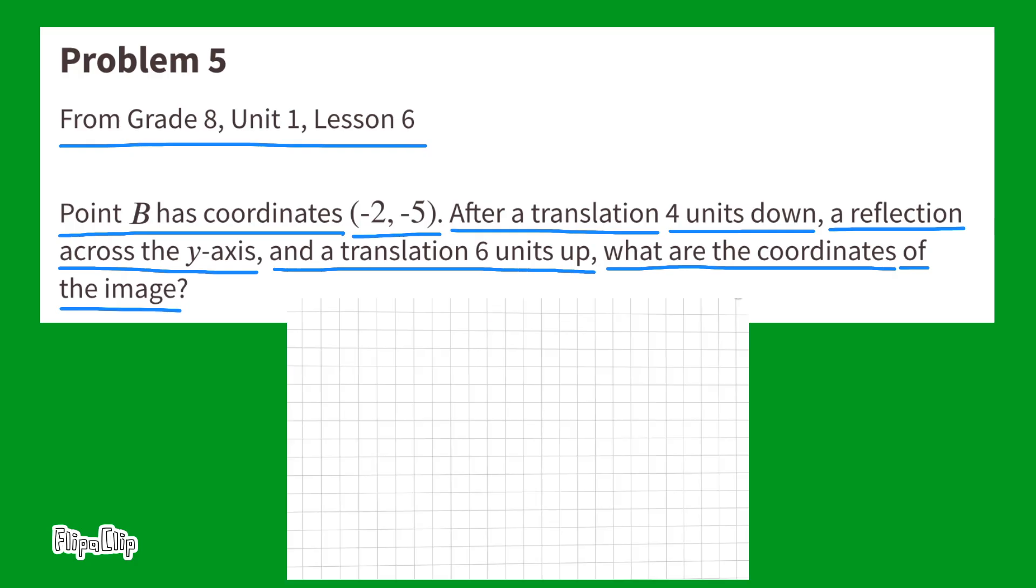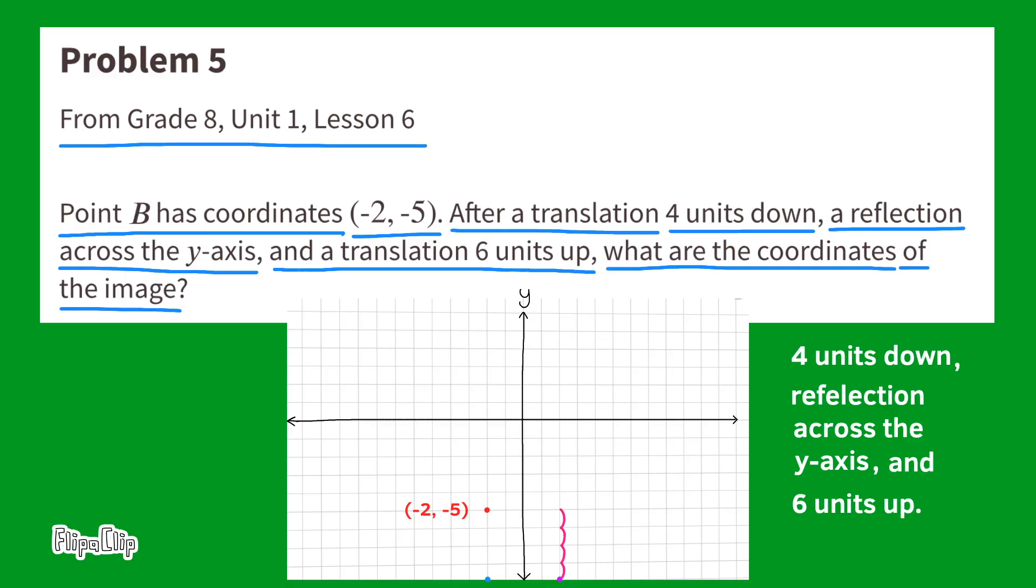I chose to use a piece of graph paper to help me keep track of all these moves. I drew an x and y-axis, and I drew the point at negative two and negative five. First, I need to go four units down. To help me keep track, I'll draw a new point at four units down. Next, I need to make a reflection across the y-axis. So, I've drawn a new point across the y-axis. And finally, I'll make a translation six units up, and the coordinates of the point are two and negative three.